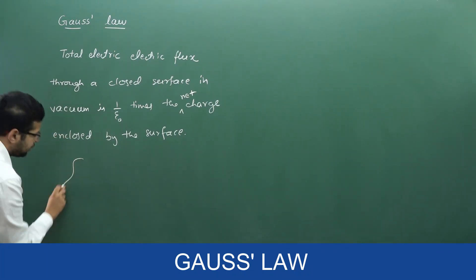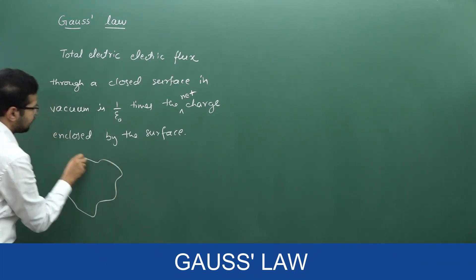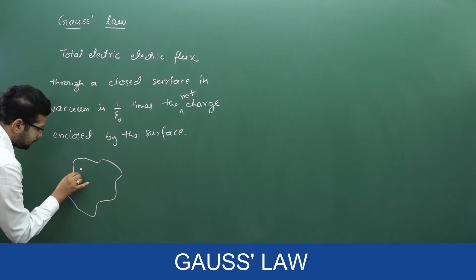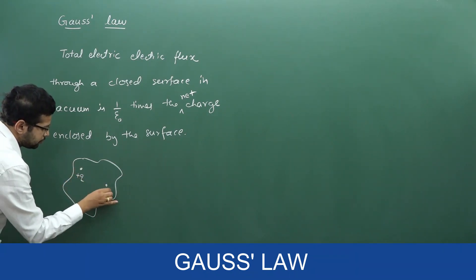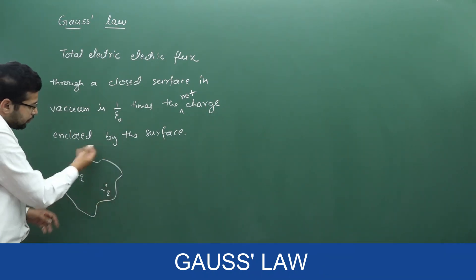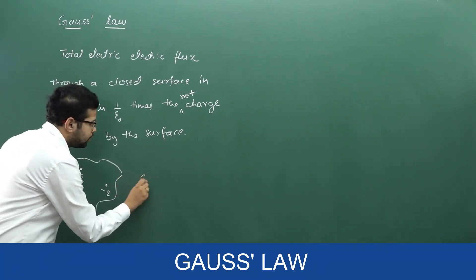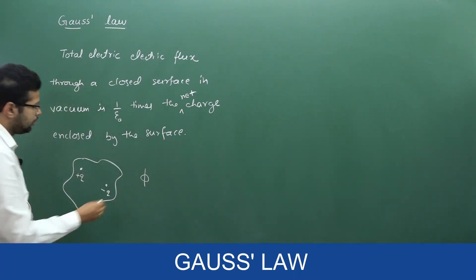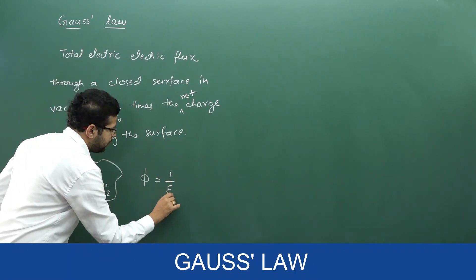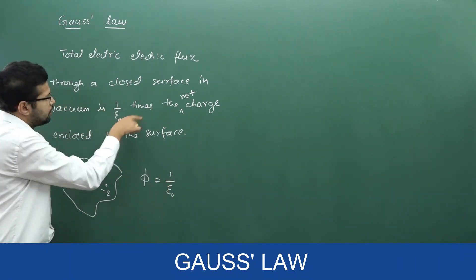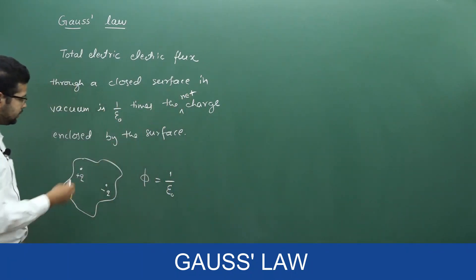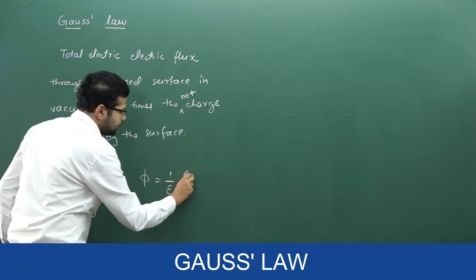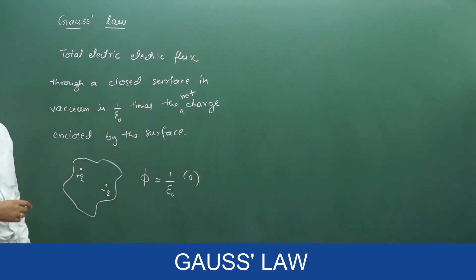Let me explain. Say there is a closed surface with a charge plus q and a charge minus q inside. What is the flux through the closed surface? According to Gauss law, it is equal to 1 by epsilon naught times the net charge. The net charge enclosed is 0, so the flux through the surface is 0.